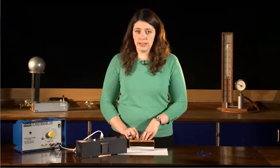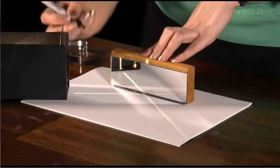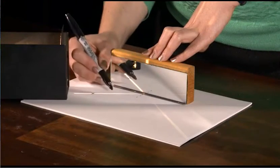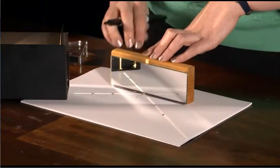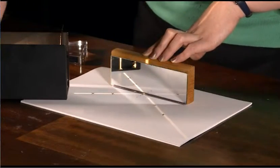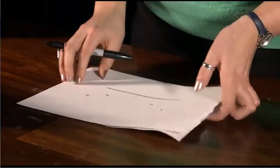Next, I need to work out where the ray is going and be able to draw it once I take the ray box away. To do that, I add in two crosses where the ray of light travels on the paper. Now I can take my ray box away, turn off my power pack, and start drawing my diagram for real.